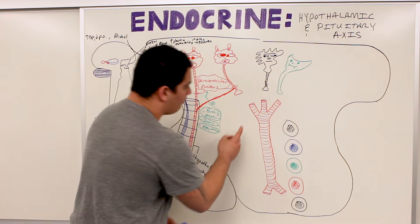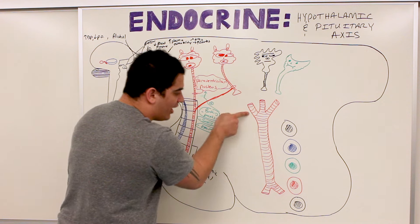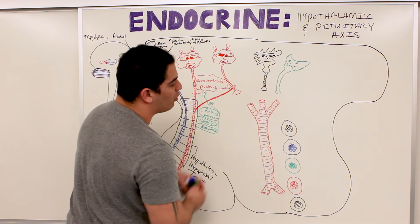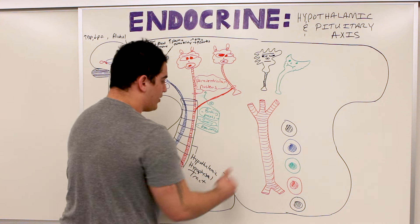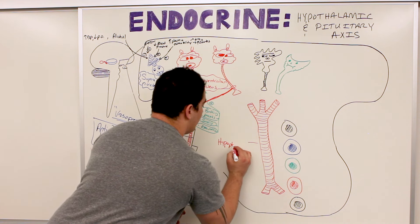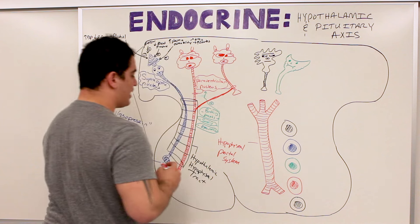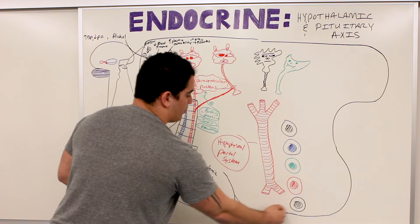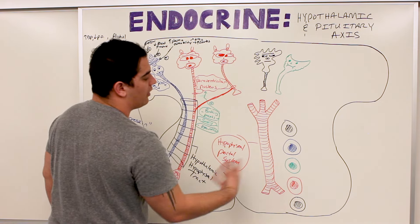On the anterior pituitary side, there is a capillary bed on the hypothalamus side and a capillary bed on the anterior pituitary side, connected by a portal vein. By definition, whenever two capillary beds are connected in series through an intermediate portal vein, this is called a portal system. Here it is the hypophysial portal system: the primary capillary plexus at the top, the secondary capillary plexus below, connected in series through the hypophysial portal vein.